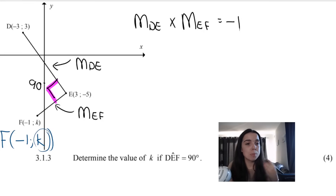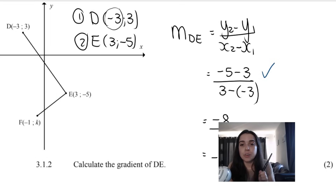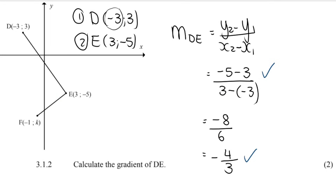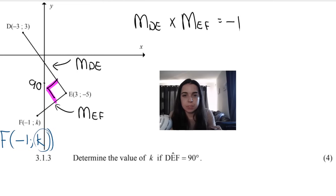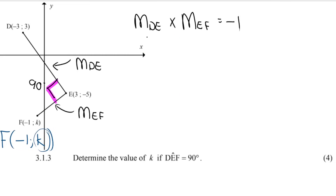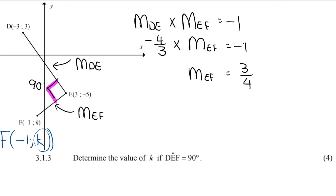We already know the gradient of line DE from the previous question — it was −4/3. If I multiply that by the gradient of line EF, it should give me −1. Rearranging that equation, the gradient of EF ends up being 3/4. To get this: it's −1 divided by (−4/3), which is the reciprocal with the opposite sign. So we now know the gradient of line EF is 3/4.